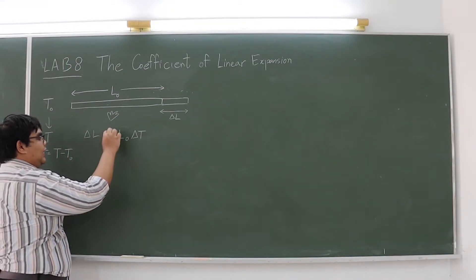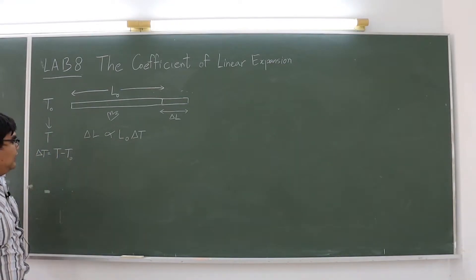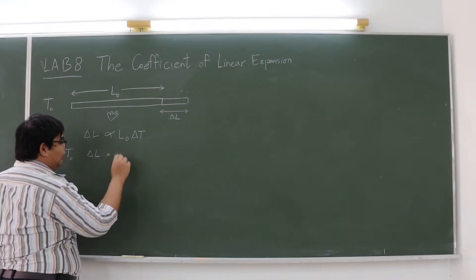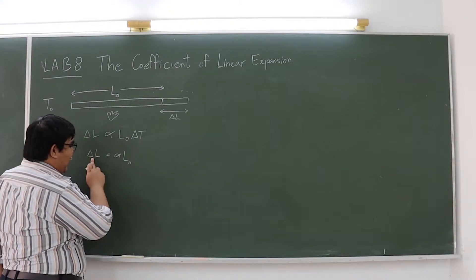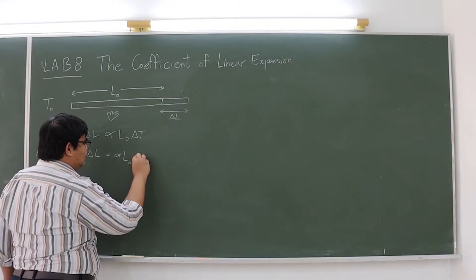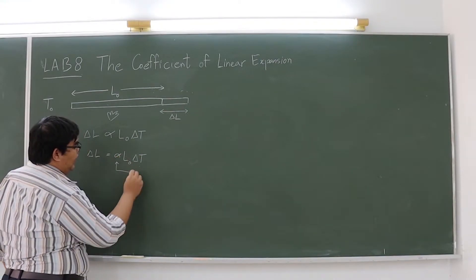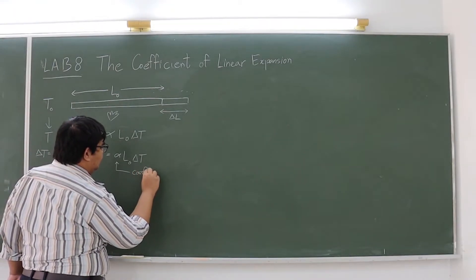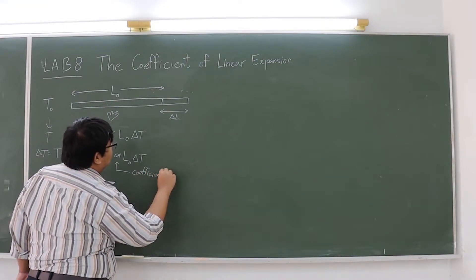We can write it as delta L proportional to L0 multiplied by delta T, or we can write it in another way as delta L equals alpha L0 delta T. This value alpha is called the coefficient of linear expansion.